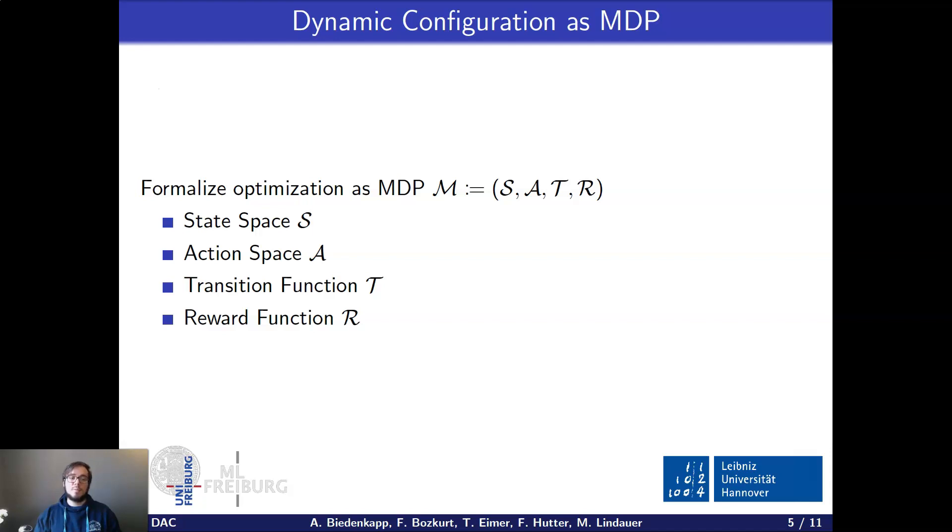So what we have here is then a state space. And the state space is exactly encoding how the algorithm has progressed since the last iteration. And the action space allows us to select the parameter value for the parameter that we are optimizing or configuring. Then there's the transition function, which tells us how states are connected in this MDP. But in practice, we don't need to know about these connectedness of the states because we can still learn or solve the MDP without knowing the transition function. But what is crucial is to have the reward function such that we can learn which configuration works well for which state.